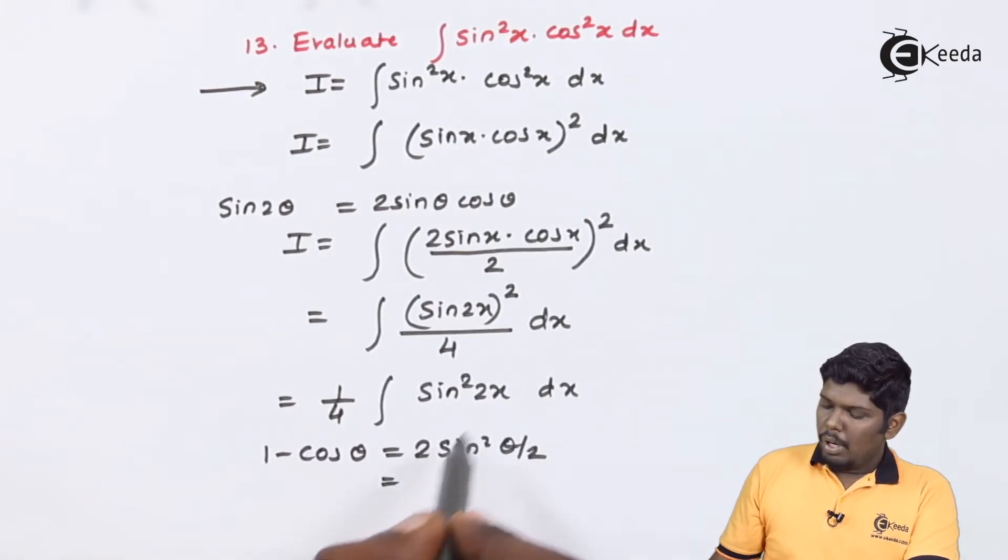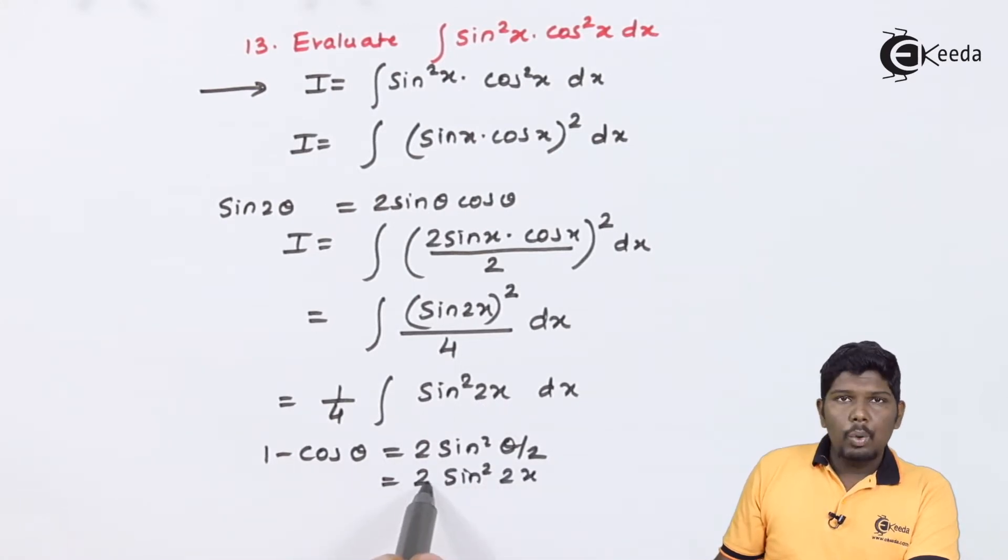Similarly, for our angle 2x that is sin²2x, here keeping 2 as it is, on the left hand side, this will give you (1 - cos θ)/2, the double angle is θ.